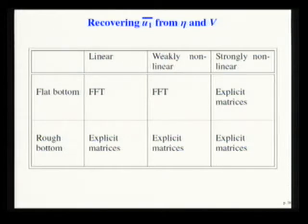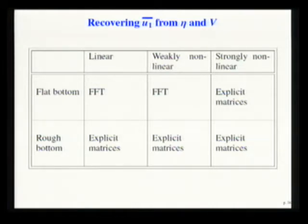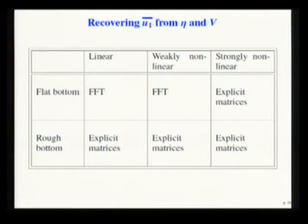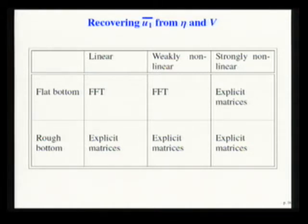This is our best choice in terms of stability since the matrices from the discretization are Toeplitz circulant skew-symmetric matrices, so the eigenvalues lie on the imaginary axis, and Runge-Kutta performs well here. The stability region cuts the imaginary axis at 2√2, which is better than the Adams-Moulton predictor-corrector choice. To recover the variable from the reduced model — the average velocity from the auxiliary variable — we do it spectrally using FFT when possible, in the flat-bottom linear or weakly nonlinear case when the Hilbert transform operator applies to only one function.